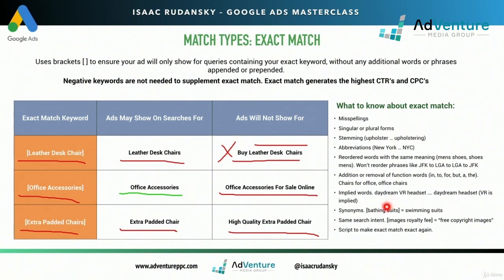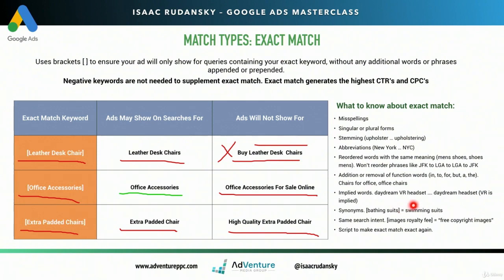Implied words — Google gives this example on their site: 'Daydream VR headset,' where VR stands for virtual reality. If Google knows that Daydream is a virtual reality headset company, then if a person searches for 'Daydream headset,' they might consider the word VR to be implied, meaning the same thing as your keyword. They still won't show 'Daydream headset for sale' because 'for sale' was not part of your keyword. But if it's specifically inherent to that product, Google retains the right to trigger your exact match keyword.